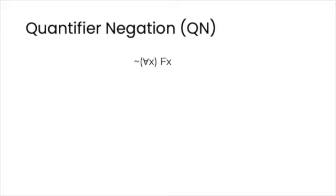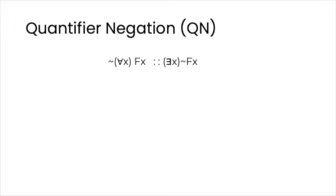So let's start with the first rule at the top: not every x is Fx. You switch the quantifier — it was universal, but now it's existential — and put the negation at the next available slot, in front of the open sentence Fx, which is the extent of the scope of the quantifier. So we get: not every x is Fx, which is equivalent to there is an x such that it is not F.